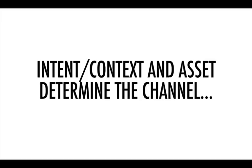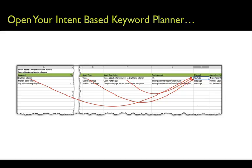As I mentioned before, intent and context plus the asset that you have decided to build is going to determine the channel. So open up that intent-based keyword planner and take a look at your work. Look at the keyword, which is an indication of intent and context, and look at the asset type that you have produced. Generally speaking, that is going to lead you to the proper channel that you want to distribute this content from.